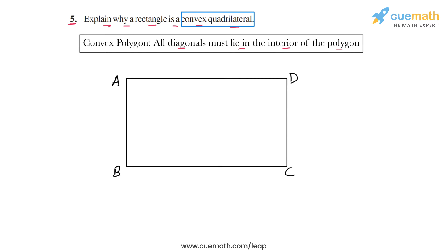Now, there are only two diagonals we can draw in this rectangle. So we have the diagonal AC and we have the diagonal BD. And we can see that both of these diagonals will lie completely inside the rectangle.